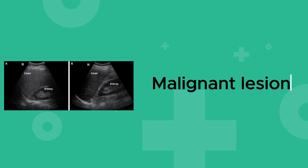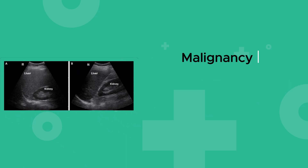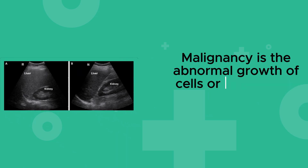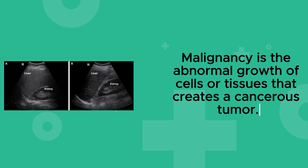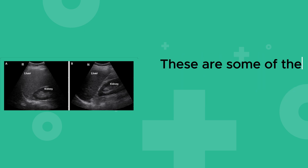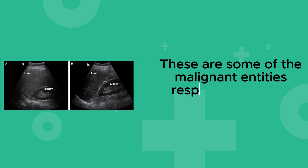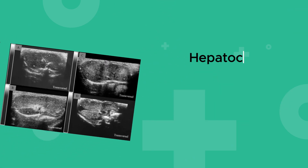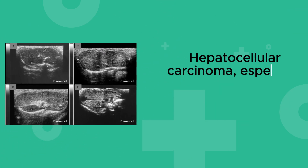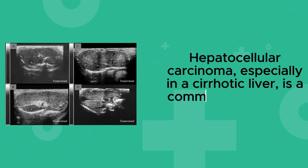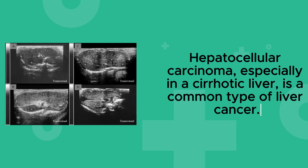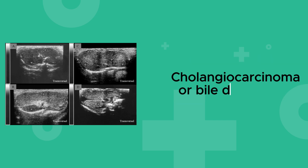Malignant lesions: malignancy is the abnormal growth of cells or tissues that creates a cancerous tumor. Some malignant entities responsible for the hyperechoic liver include hepatocellular carcinoma, especially in a cirrhotic liver, which is a common type of liver cancer, and cholangiocarcinoma, or bile duct cancer.